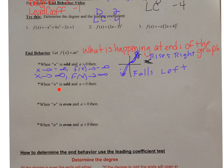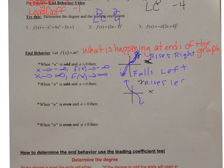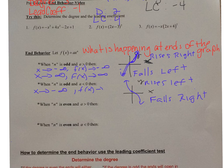When n is odd — like 1, 3, 5, 7, 9 — and a is less than 0, meaning a is negative, the graph rises to the left and falls to the right. So as x goes to negative infinity, f(x) goes to positive infinity. As x goes to positive infinity, f(x) goes to negative infinity.